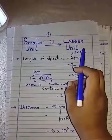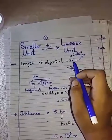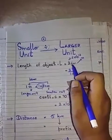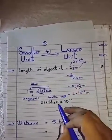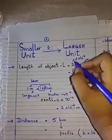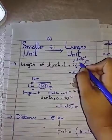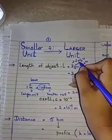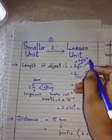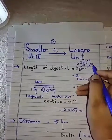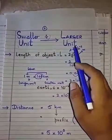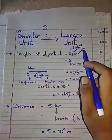Another simple method for converting a smaller unit into a larger unit: if a prefix is given in a quantity — such as 2 centimeters — then 'centi' is a prefix, and centi equals 10 raised to power −2. You can simply replace the prefix with its power of ten. So 2 centimeters = 2 × 10⁻² meters. This is a straightforward method for converting prefixed units.